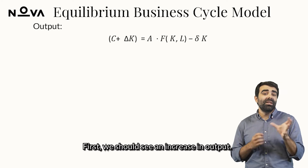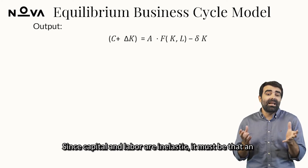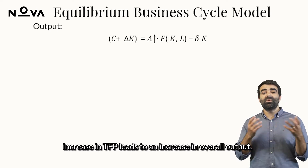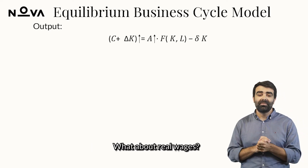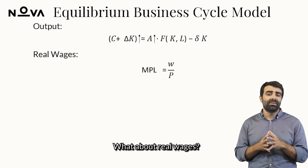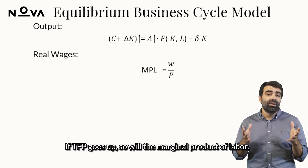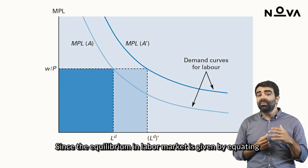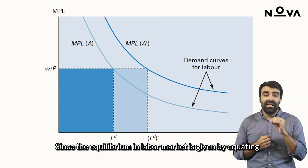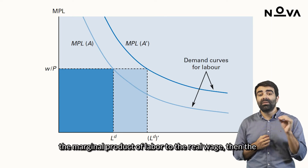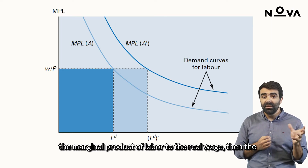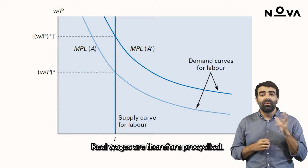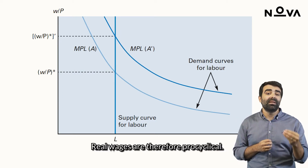First, we should see an increase in output. Since capital and labor are inelastic, an increase in TFP must lead to an increase in overall output. What about real wages? If TFP goes up, so will the marginal product of labor. Since equilibrium in the labor market is given by equating the marginal product of labor to the real wage, the real wage will increase. Real wages are therefore pro-cyclical.